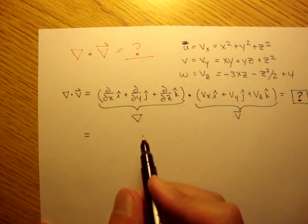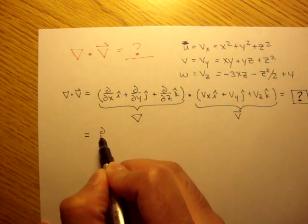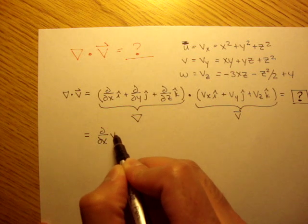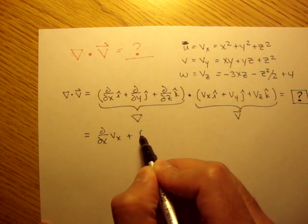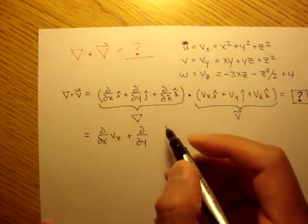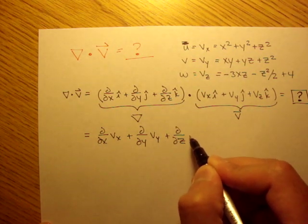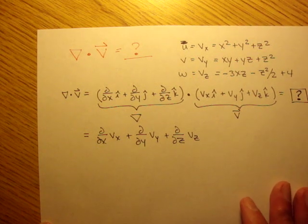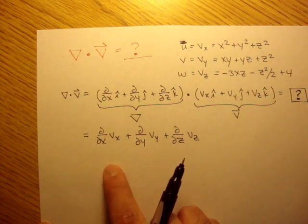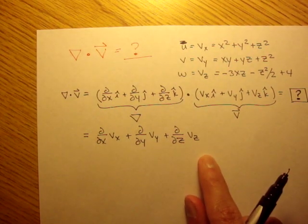So we can actually go ahead and manipulate this a little bit more. This is actually going to equal the partial in respect to x of v of x, plus the partial in respect to y of v of y, plus the partial in respect to z of v of z. And remember, dot products give us a scalar result.